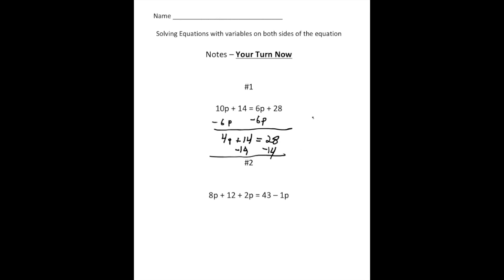So now we have 4P equals 14. Divide both sides by 4. And P is going to be, let's see, 4 goes into 14 three times with two left over. So it's going to be three and a half. How'd you do? Did you get that one right?